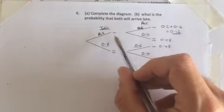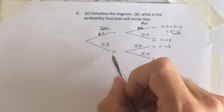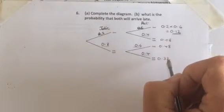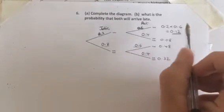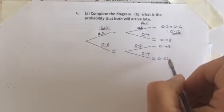Julie late and Pat late, Julie late and Pat not late, Julie not late and Pat late, or Julie not late and Pat not late - one of those is absolutely certain to happen. And so those probabilities must add up to 1, and if you check, those numbers do add up to 1.